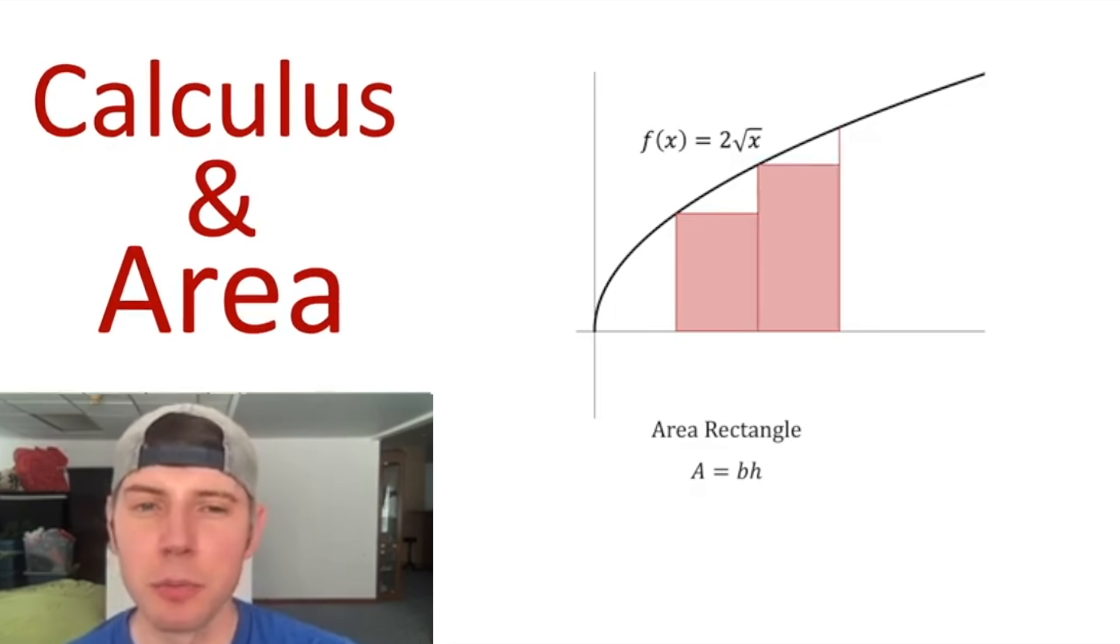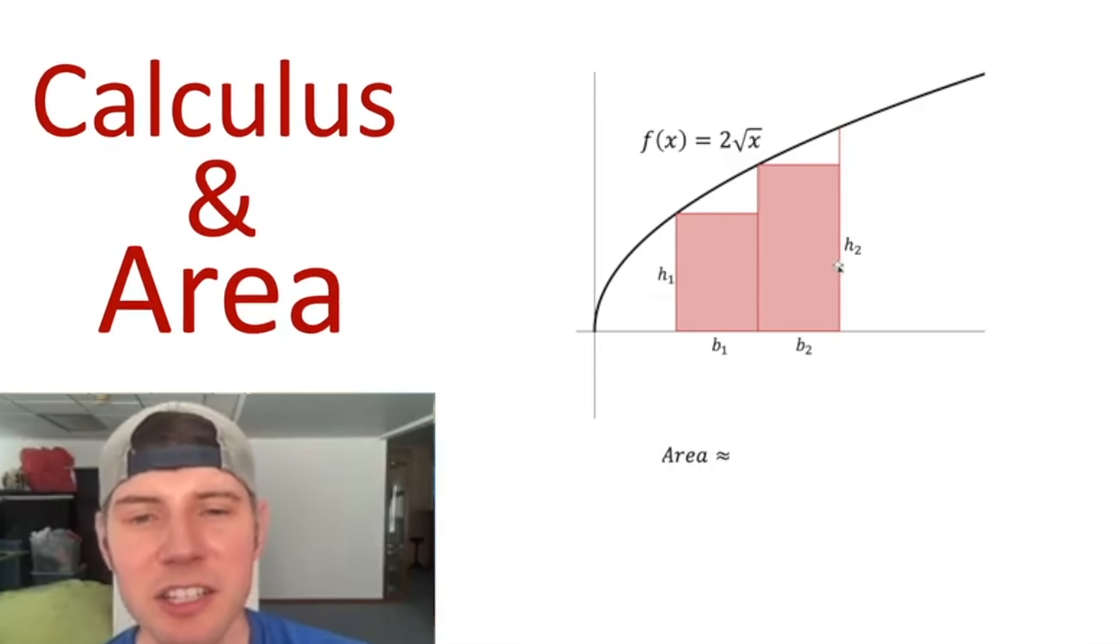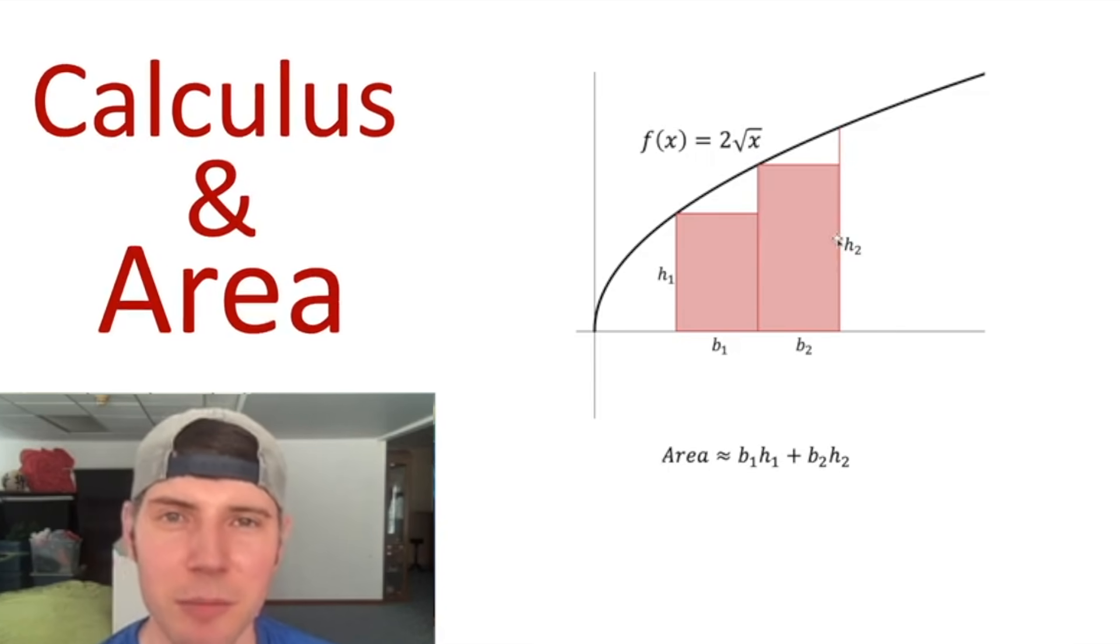I can cut it into two pieces and start using two figures to estimate it. Now I've gotten closer. This is the base of our first rectangle. This is the base of our second rectangle. This is the height of our first rectangle, and this will be the height of our second rectangle. Our estimate for the area would be the area of this first rectangle, B1 times H1, plus the area of the second rectangle, B2 times H2.